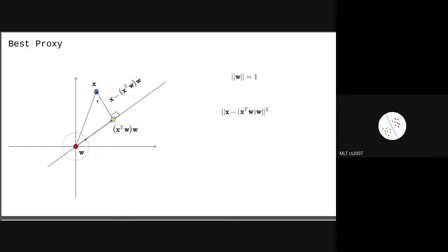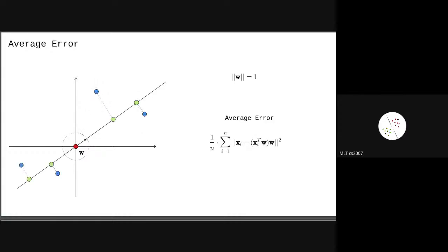The error x minus (x transpose w)w - its squared length - is the reconstruction error for one point. You average this error over all n data points: sum x_i minus (x_i transpose w)w squared, divided by n. Visually, you're squaring the perpendicular distances from each data point to the line, summing them all and dividing by n - the average squared error - and you want to minimize this.